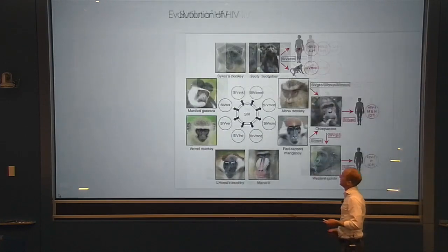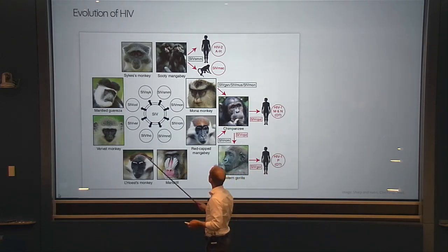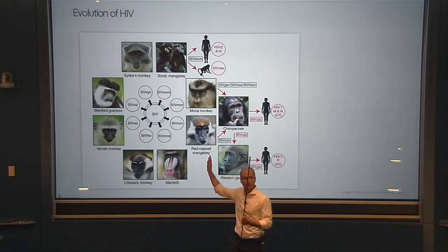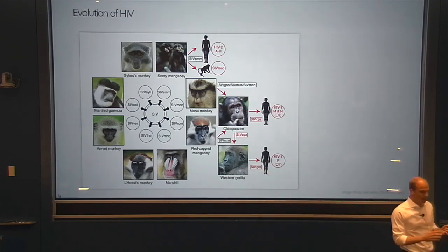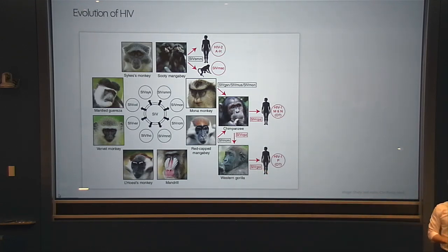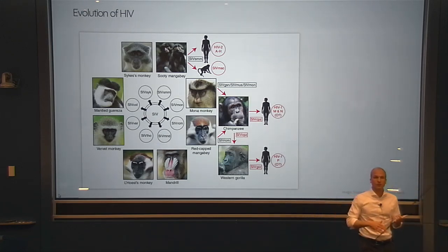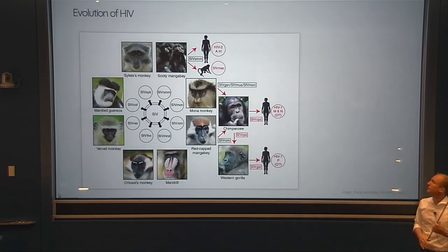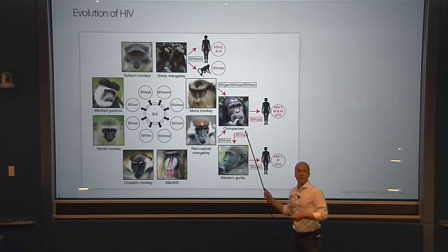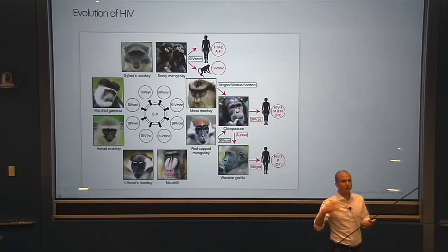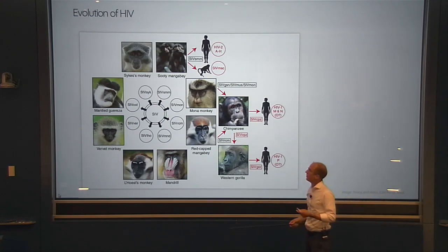Let's start with HIV. HIV is a retrovirus circulating among a large number of different animals — here showing monkeys and primates. There have been many transmissions between different animals, including humans. HIV has been transmitted from chimpanzees to humans, from gorillas to humans, from sooty mangabees to humans — and those are only the ones we know about. There have probably been many such cross-species transmissions in the past.